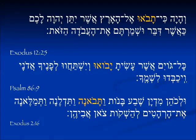For second person masculine plural, Exodus 12:25 — Moses is speaking to the people and giving instruction: 'Ki tavo'u el ha'aretz' — when all y'all come into the land which Yud-Heh-Vav-Heh will give. In Psalm 86:9, with the third person plural, they will come: 'Kol goyim asher asita yavo'u' — all the nations which you have made, they will come and they will worship before you.